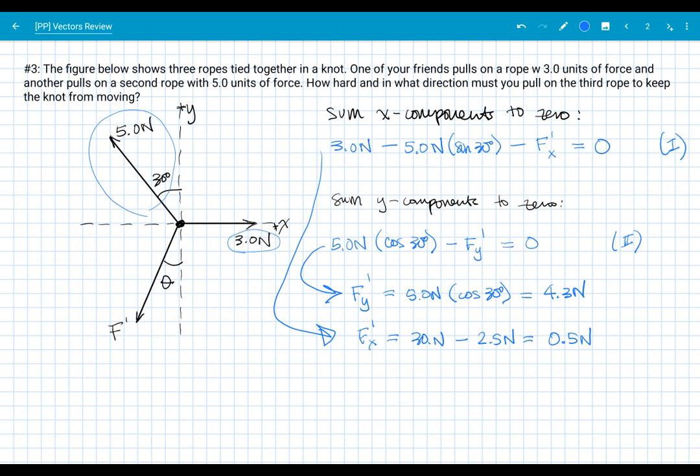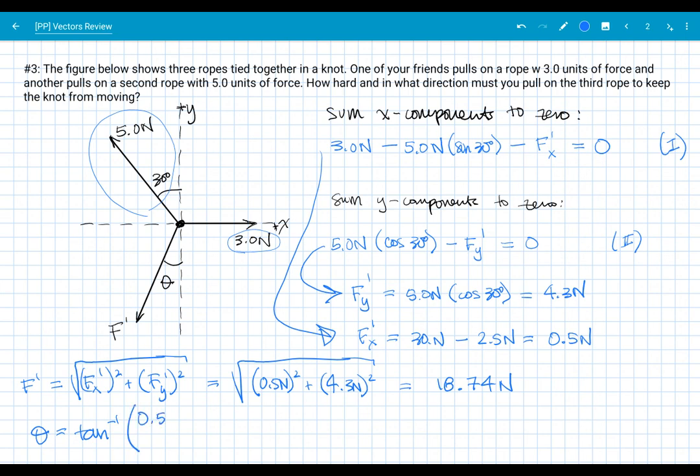And for this one, we're being asked to find our f prime there. So how hard we have to pull on the rope. So if we want to find f prime, the magnitude of f prime, I'm not putting a hat on that. I'm just finding the magnitude of it. That's going to be the square root of fx prime squared plus fy prime squared. And I can put that in: square root of 0.5 newtons squared plus 4.3 newtons squared. And that will give me something like 18.74 newtons. That's the magnitude of f prime.